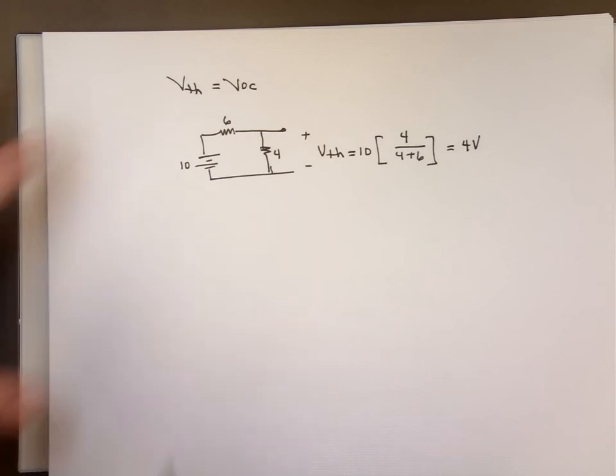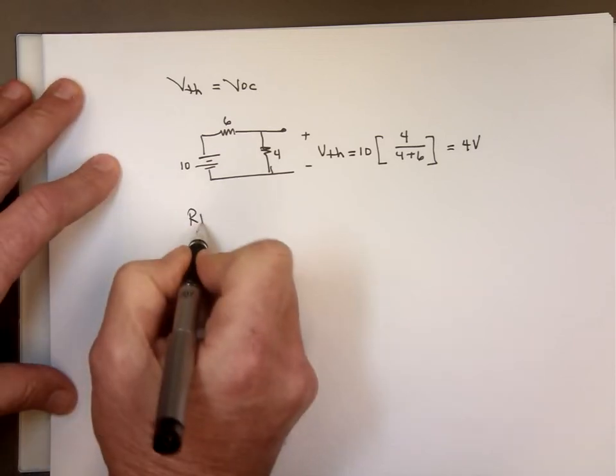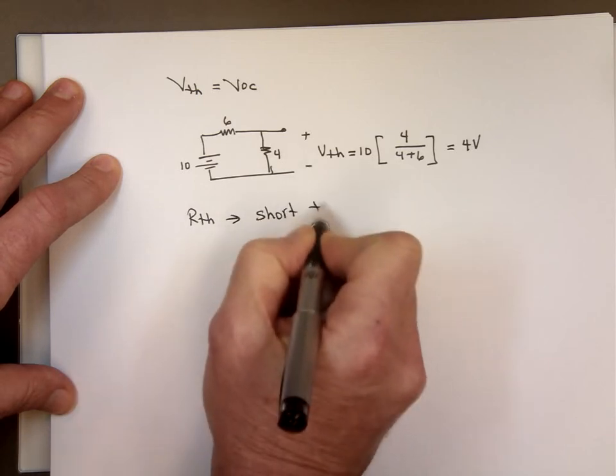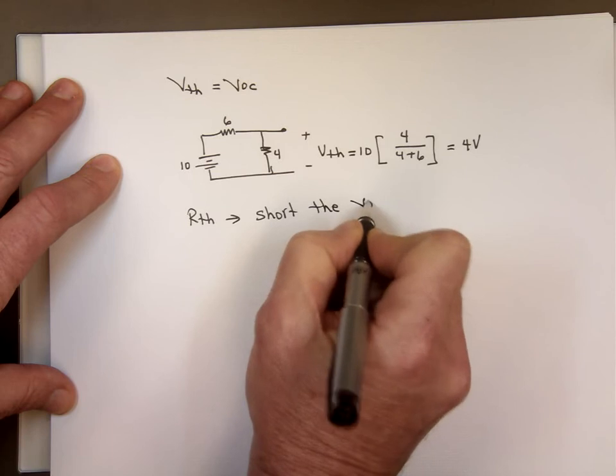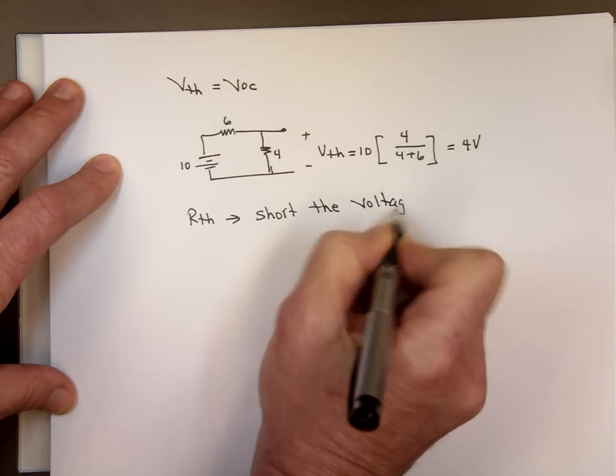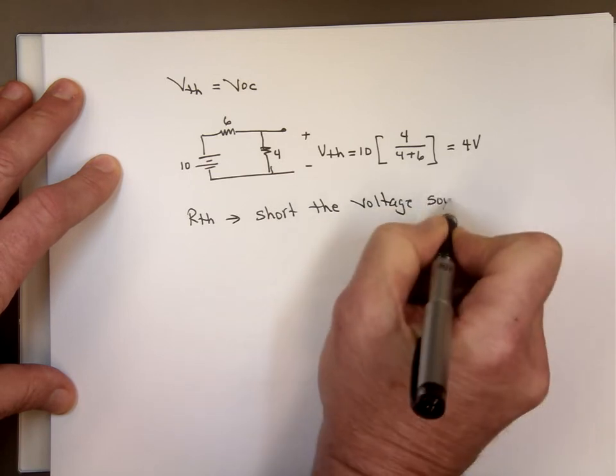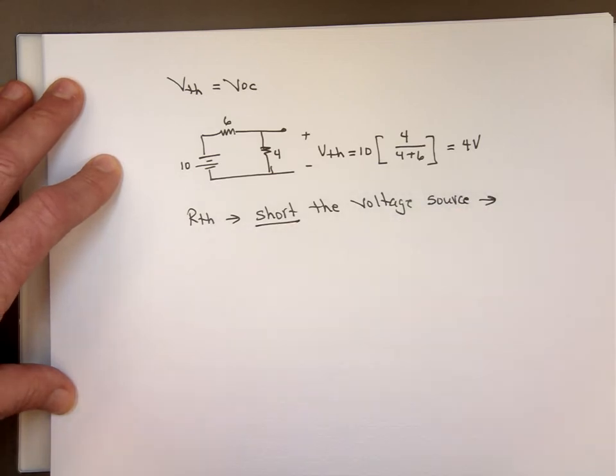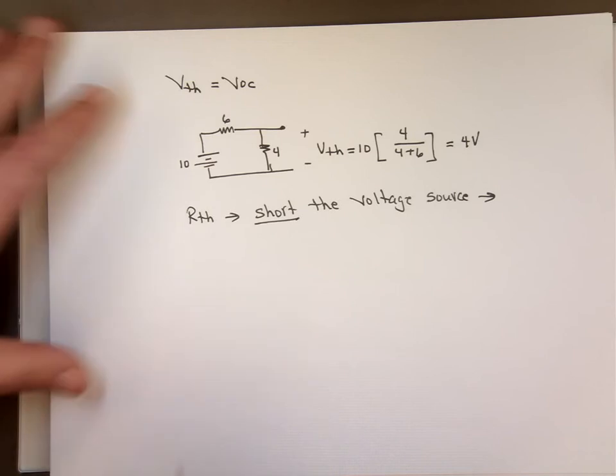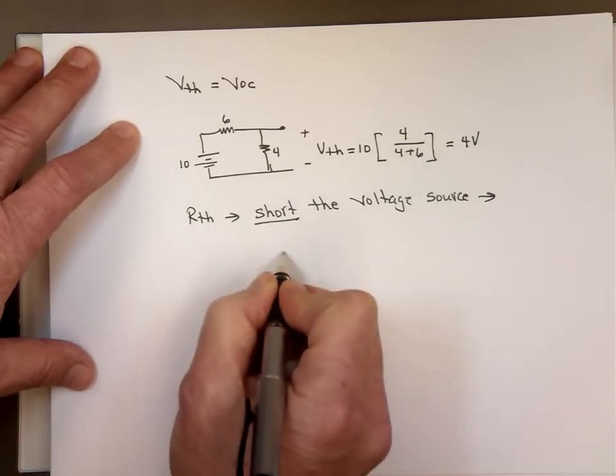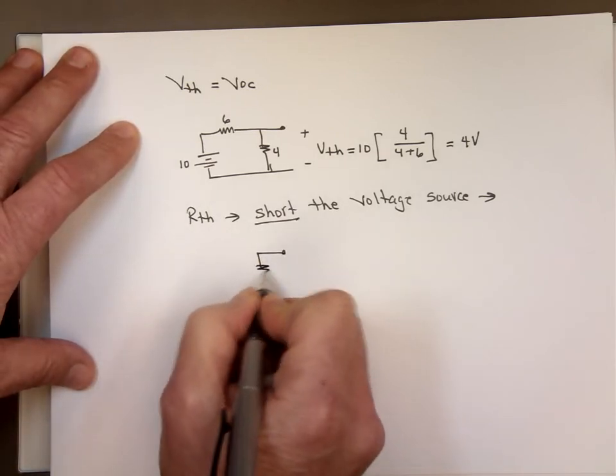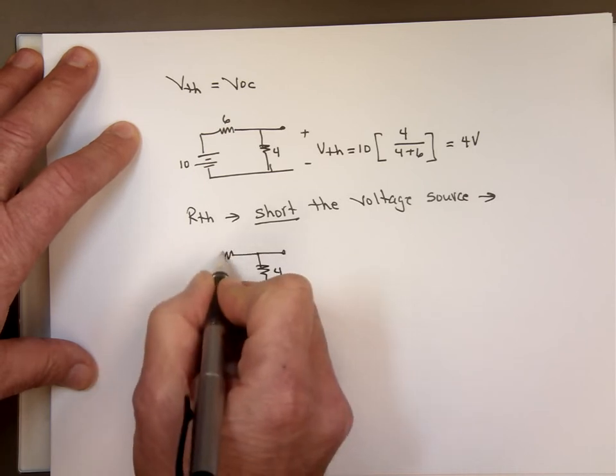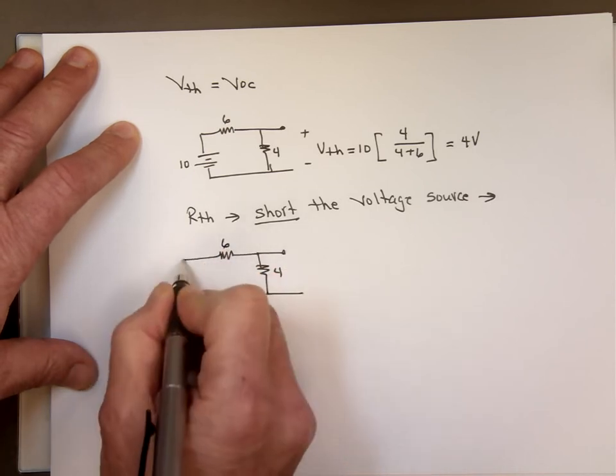And to find R thevenin for this circuit, we need to short the source, the voltage source. How do you short the voltage source? You make it a short, well, I gave you short, make it a short circuit. So if you short circuit that voltage source, this way you have, and short circuit this.